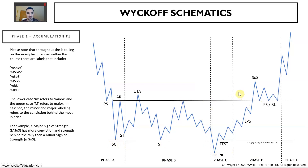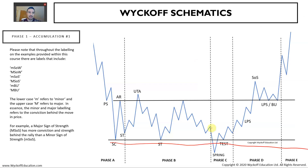Phase C is all about testing. There's often a spring that undercuts the low of the trading range and quickly rebounds back into the structure. This is the composite operator doing that final test to see how much supply is available. A spring has the added advantage of stopping all the weak hands out who had their stop losses set below the range - the spring quickly knocks them out, shaking them out, and then quickly reverses. You tend to get a test after as well, and the reversal of that test is also an optimal place to enter.